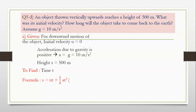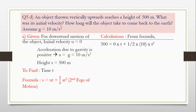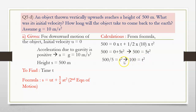Formula: s is equal to ut plus half a t square — this is the second equation of motion. Substituting: 500 is equal to 0 into t plus half into 10 into t square, which gives 500 is equal to 5t square. Therefore t square is equal to 500 divided by 5, which is 100. So t is equal to square root of 100, giving 10 seconds.